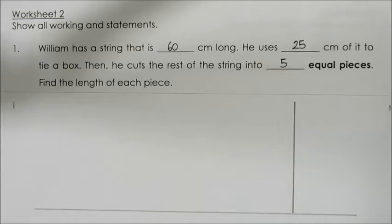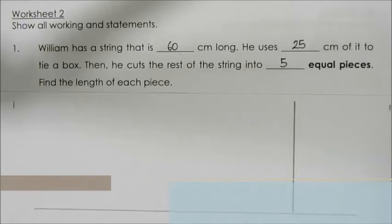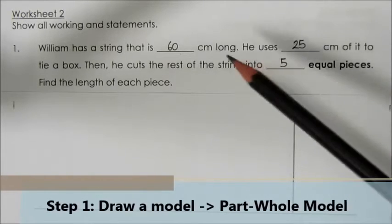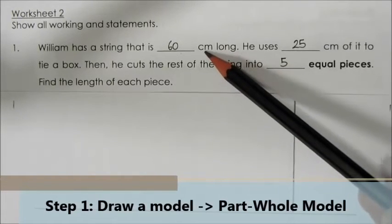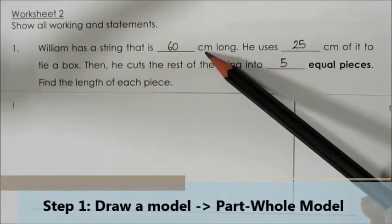In Primary 2 and Primary 3, we have all learned how to draw a part-hole model and a comparison model. And for today's lesson, we will look at the part-hole model. The question states that William has a string that is 60cm long.